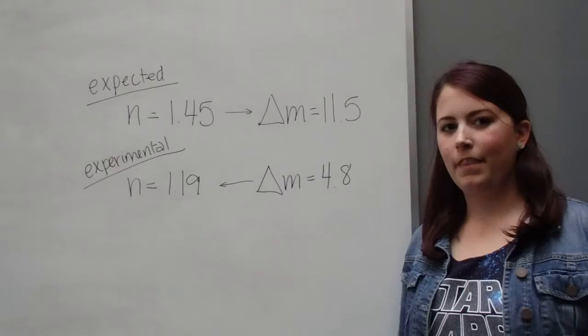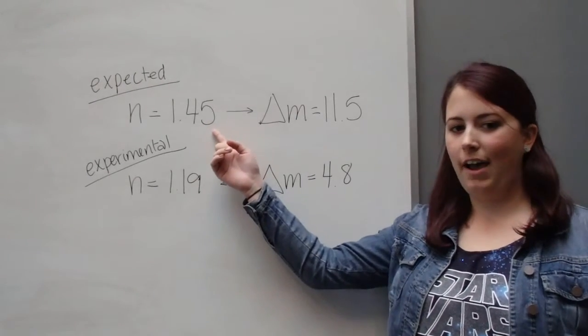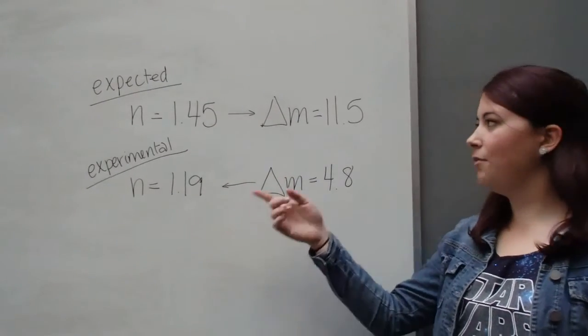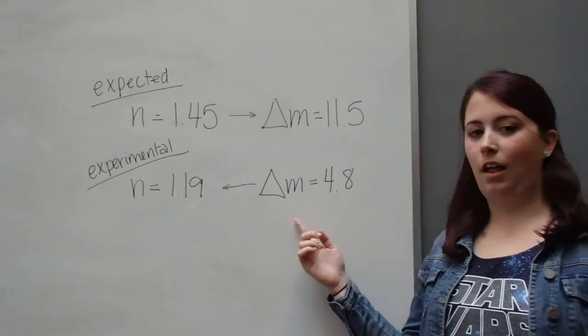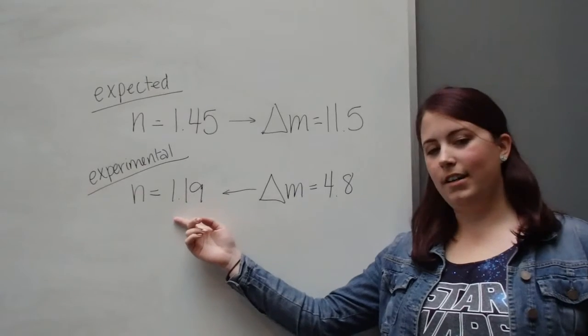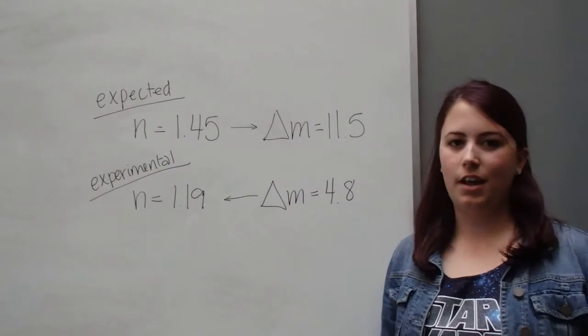As current was changed, the circular fringes shifted but not as we expected them. The sample we used was fused silica which has an index of about 1.45. With all the other variables we've now found, we expected a fringe shift of about 11.5. Our fringe shift was a lot smaller than that and so our index was also smaller. We think this error comes from the mode hopping behavior of the laser diode.